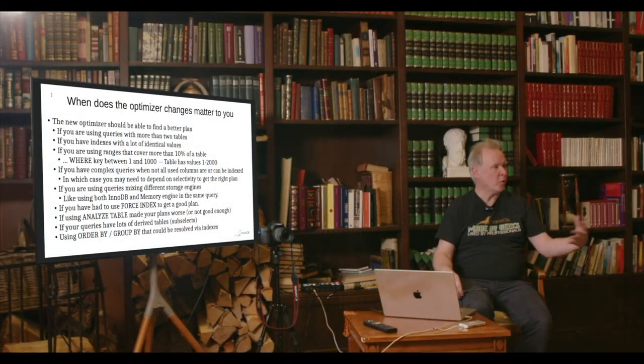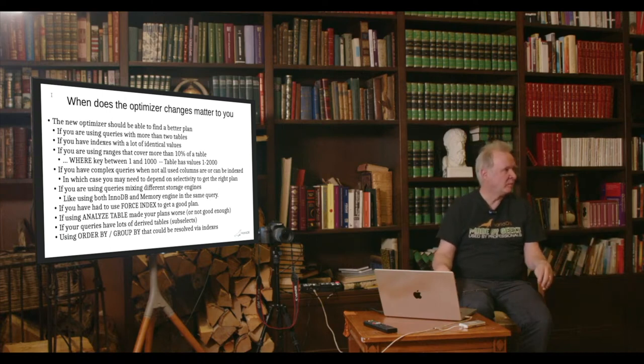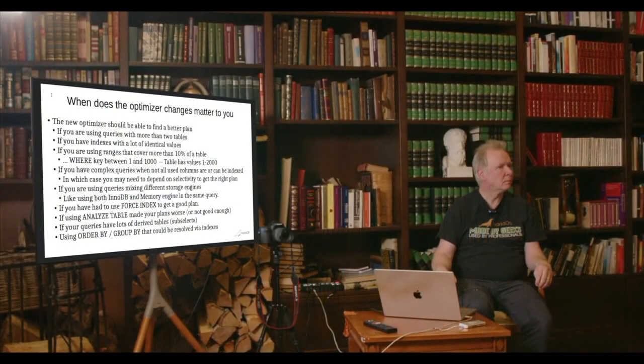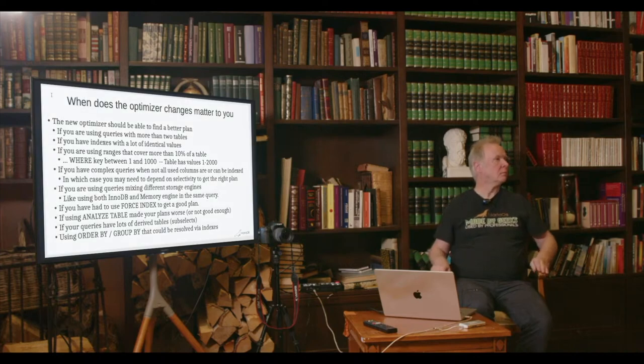That tool would probably help us a lot because it would simplify the whole process. Regarding what Monti mentioned: we do have cases in our code where we've had to use force index or use index to get a good plan. I'm very interested to see whether those can be removed, because if the cost calculations are correct then none of those should be needed. That's why I'm interested in checking this out in our environment — in a controlled situation — to see how many of the optimizer bugs we reported actually get fixed.